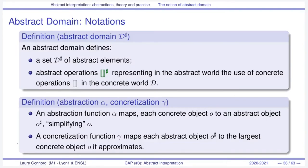Let's now come to definitions. An abstract domain defines a set of abstract elements and a set of abstract operations that morally represent the counterpart of the concrete operations inside the abstract world. We define two maps, alpha and gamma, which permit to map any concrete object to an abstract object, and the converse — the concretization function — denoted by gamma, which maps the abstract object to the largest concrete object it approximates.